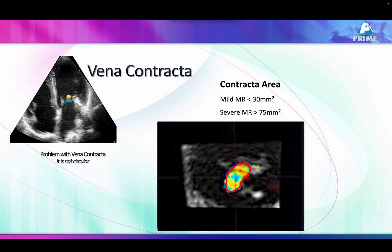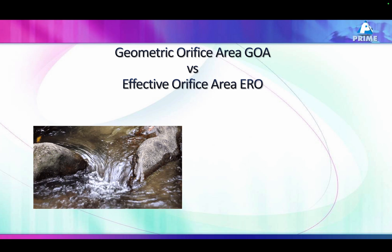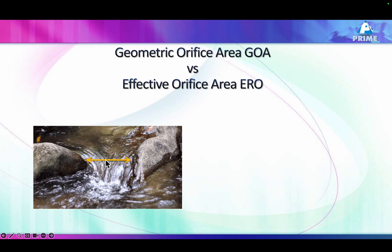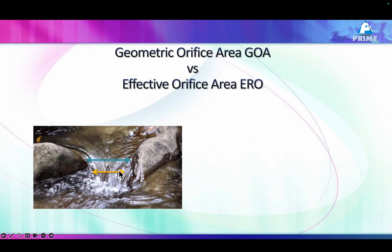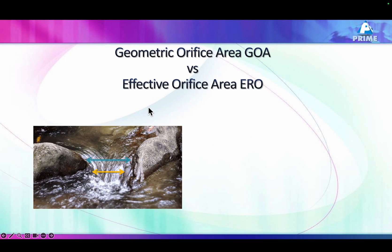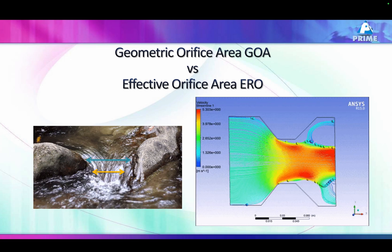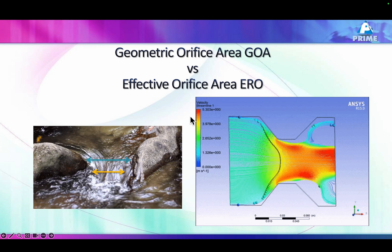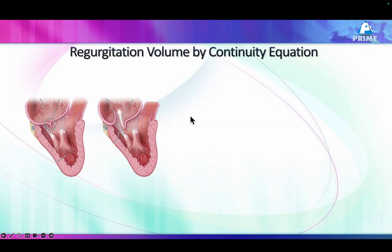Here's an interesting fact: the narrowest portion of a jet — the vena contracta — is actually located slightly downstream from the orifice, and it is smaller than the actual orifice area. So when you calculate the vena contracta area, it is a little smaller than the actual valve orifice area. Just keep in mind that vena contracta is not actually the valve area or orifice area itself. Vena contracta used properly in clinical practice probably gives you a very good assessment of mitral regurgitation severity.